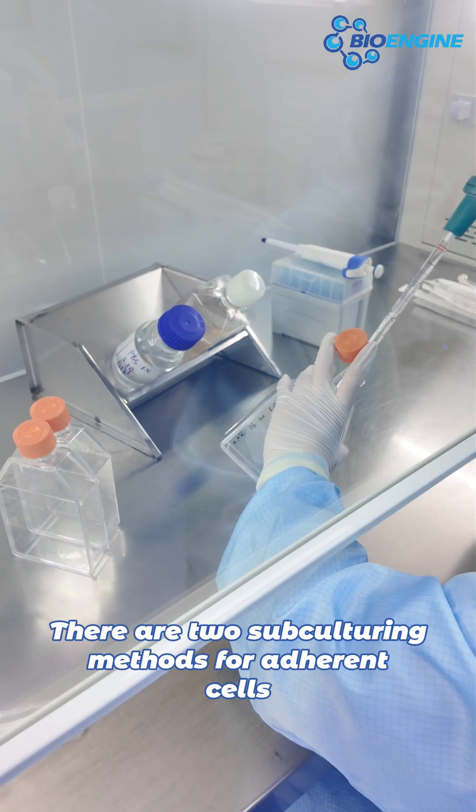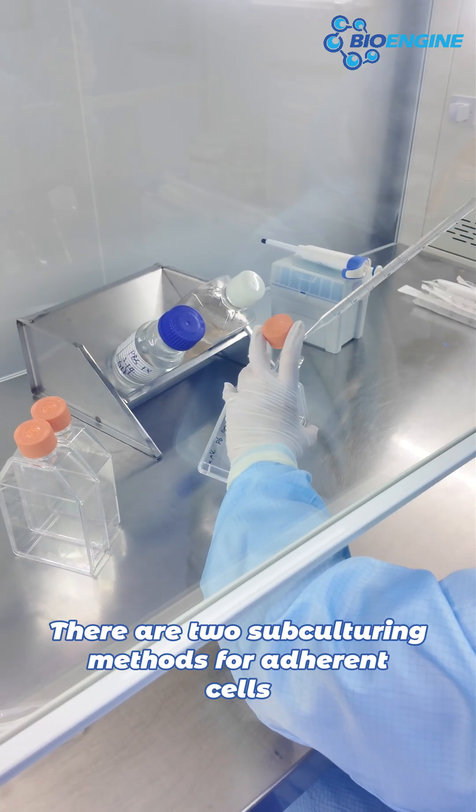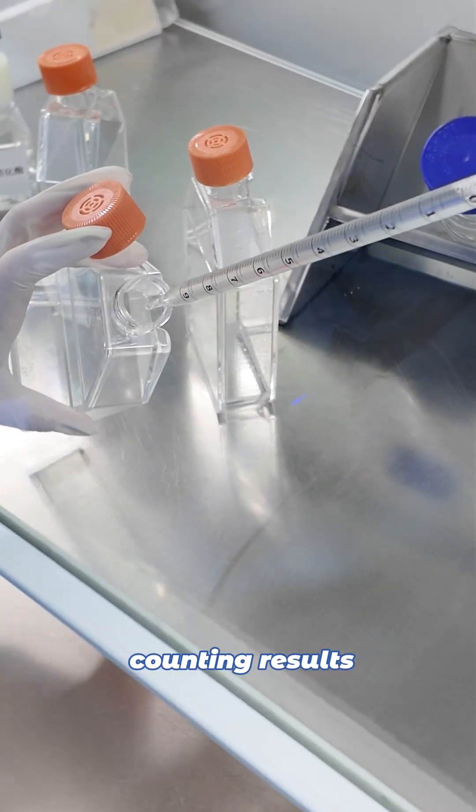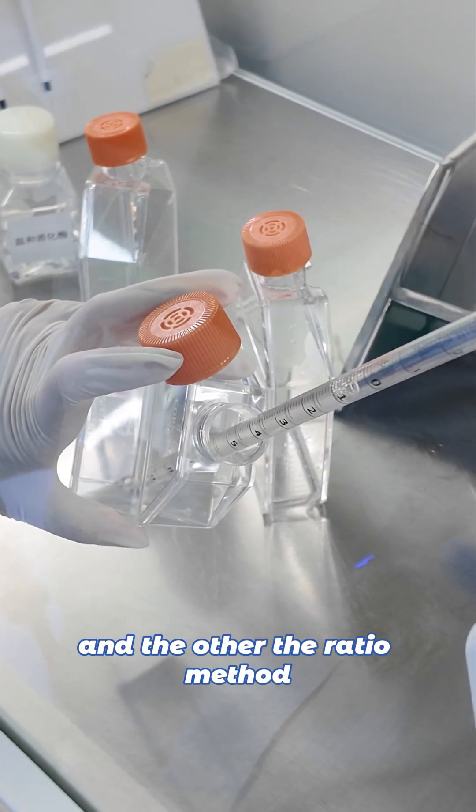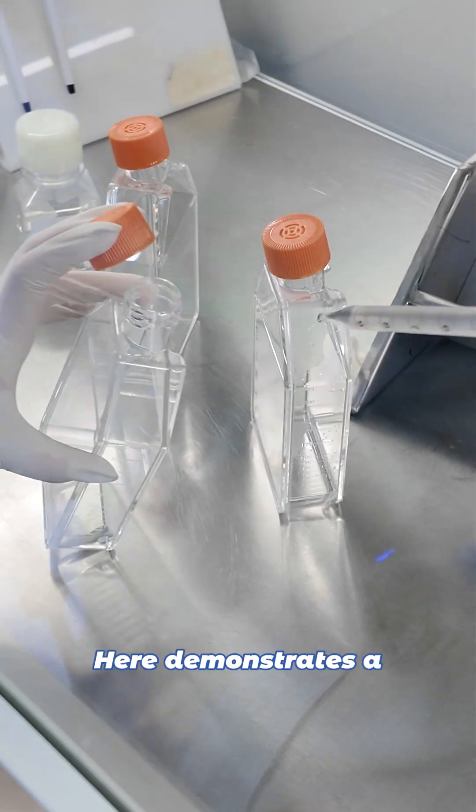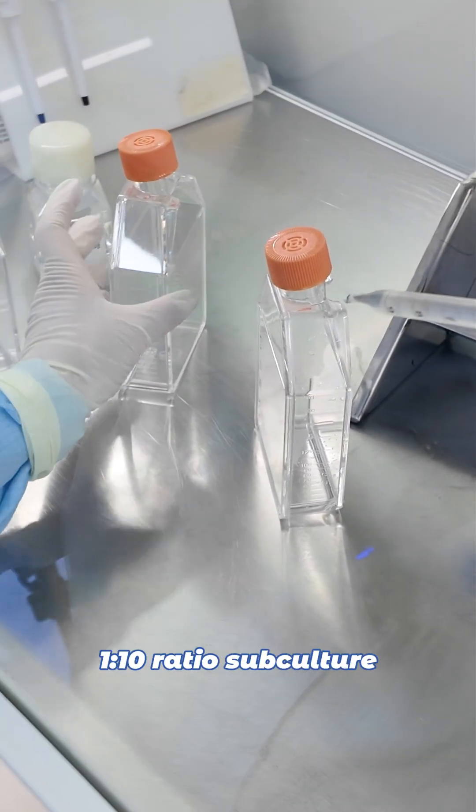There are two subculturing methods for adherent cells: one based on counting results, and the other the ratio method. This demonstrates a 1 to 10 ratio subculture.